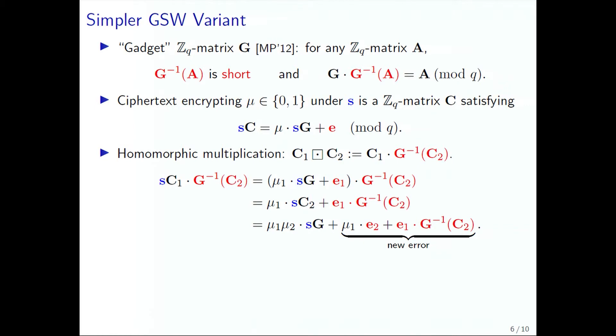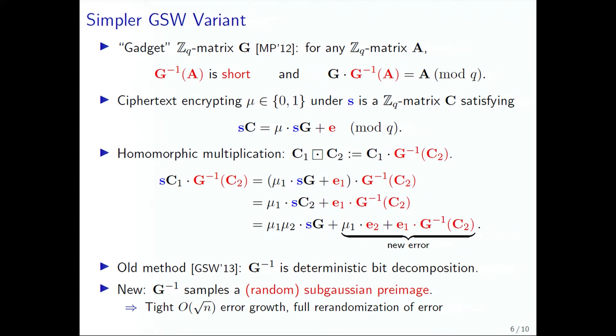The actual decryption relation for the scheme is for a bit encrypted under a vector secret key S. The homomorphic multiplication of two ciphertexts is C_1 times the G-inverse of the ciphertext on the right. The error growth is mostly dependent on the form of the G-inverse of the right-hand ciphertext. In the actual paper of Gentry, Sahai, and Waters, the G-inverse is done as a deterministic bit decomposition, and the error E_1 grows by a factor N. Our method, since we sample a random sub-Gaussian preimage, only grows by a square root of N factor, which is tighter, and the error is fully re-randomized.